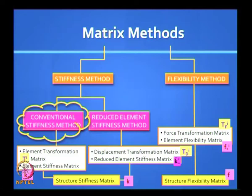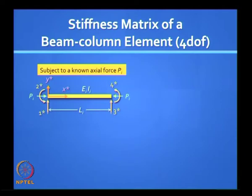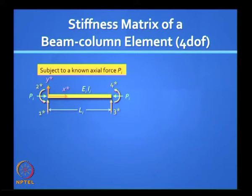We will be using only the conventional stiffness method here. If you are using a beam element, which will now be called a beam column element, because we are going to consider the interaction between the axial force and the bending and shear forces and their effects. It is more appropriately called a beam column element. We are switching over from the beam element to the beam column element, with the difference that we now have an axial force P_i whose value is known.